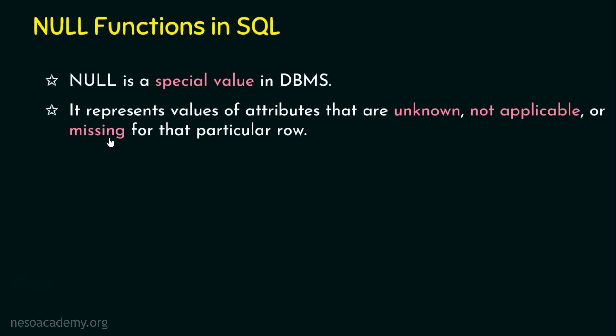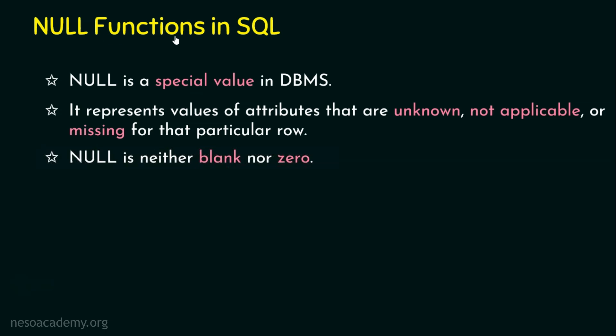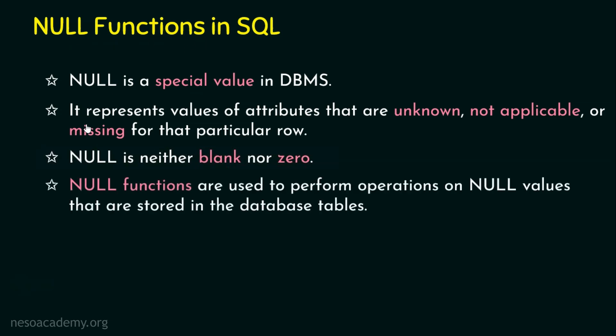If you want more information about null values, please navigate to chapter 2 of this playlist and visit the null values lecture for a better understanding. Null is neither blank nor zero — it is a special value. Null functions operate on null values, and these functions are used to perform operations on null values stored in database tables. We have exclusive functions that can operate on null values stored in databases, and these are referred to as null functions.